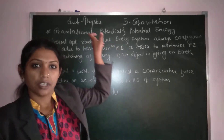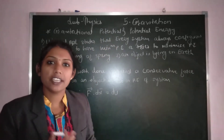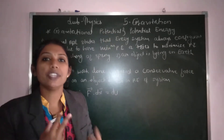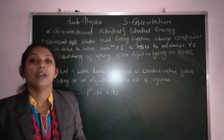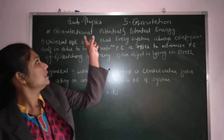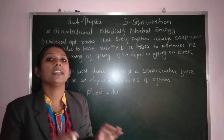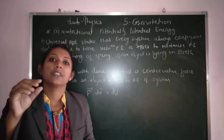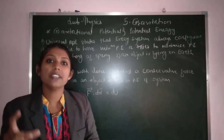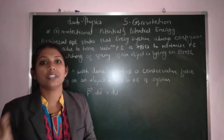These are two different topics here: gravitational potential energy and gravitational potential. When the object is at a steady position or in steady motion, at that time it should have some energy, and that energy is called potential energy. So, potential energy is the energy when the particle is in a steady position or steady motion.